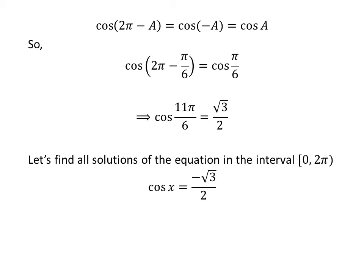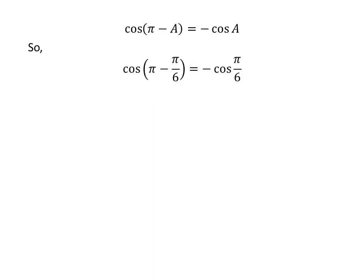Now let us find the solutions to the equation cosine of x is equal to minus square root of 3 upon 2 in the interval 0 to 2 times pi. We know the trigonometric identity cosine of pi minus a is equal to minus cosine of a. Application of the above identity implies that cosine of pi minus pi upon 6 is equal to minus cosine of pi upon 6. As pi minus pi upon 6 is equal to 5 times pi upon 6, plugging in the value gives us cosine of 5 times pi upon 6 is equal to minus square root of 3 upon 2.